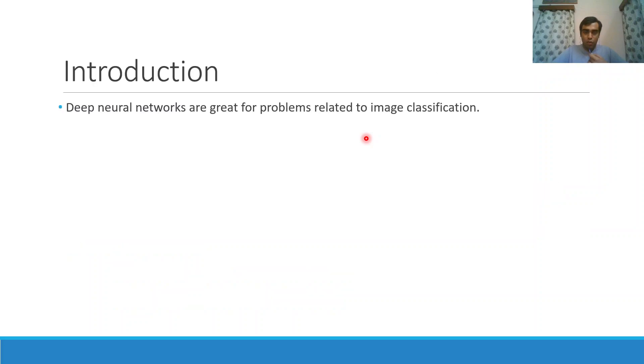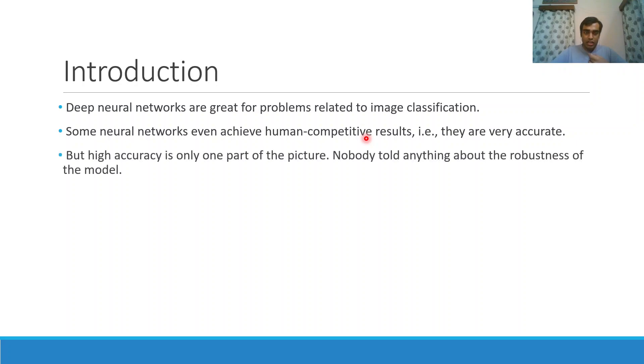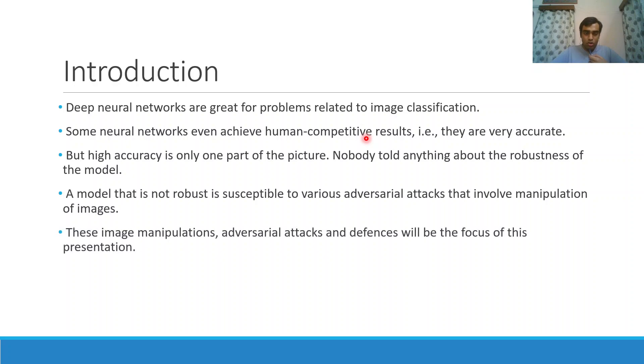Deep neural networks are great for image classification problems. Some neural networks have achieved human competitive results and are very accurate. But being accurate is only one part of the utility of the model. If a model is not very robust, then it is susceptible to various adversarial attacks. An adversarial attack is a deliberate attempt to force the model into outputting a wrong classification label. The image manipulation techniques that can be used to generate adversarial samples, the adversarial attacks, and the defenses will be the focus of this presentation.